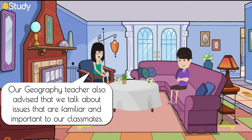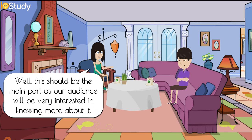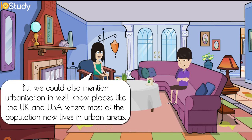Our geography teacher also advised that we talk about issues that are familiar and important to our classmates. So, do you think we should stick to urbanization in Vietnam? Well, this should be the main part, as our audience will be very interested in knowing more about it. But we could also mention urbanization in well-known places like the UK and USA, where most of the population now lives in urban areas.